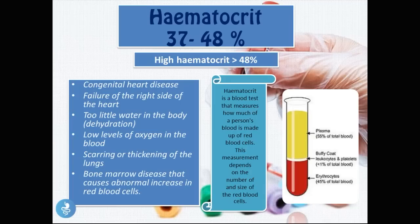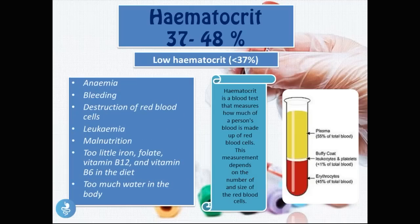By now you should notice a trend: when we have a high red blood cell count, high hematocrit, or high hemoglobin, the causes are more or less the same because they are all specifically related to red blood cells. Likewise, a low red blood cell count, low hematocrit, or low hemoglobin will share similar causes. A low hematocrit is a value less than 37 percent and includes causes such as anemia, bleeding, destruction of red blood cells, leukemia, malnutrition, deficiencies of iron, folate, vitamin B12, or vitamin B6, and overhydration.